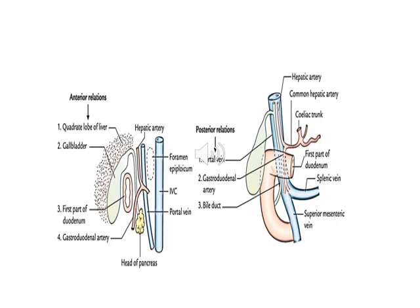In this picture you can see the round structure is the first part of the duodenum. Immediately anterior to it are the gallbladder and liver. Posterior to the first part of the duodenum you can see the bile duct, gastroduodenal artery, and the portal vein. Posterior to these three structures is a fold of peritoneum called the foramen epiploicum, or epiploic foramen, and posterior to that foramen you can see the inferior vena cava. These are the anterior and posterior relations of the first part of the duodenum.